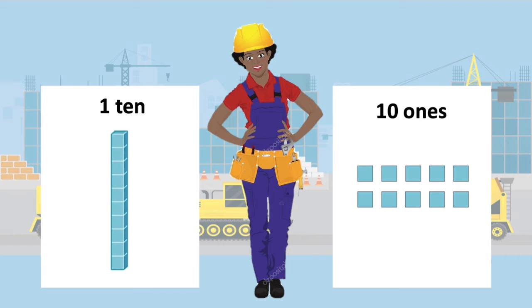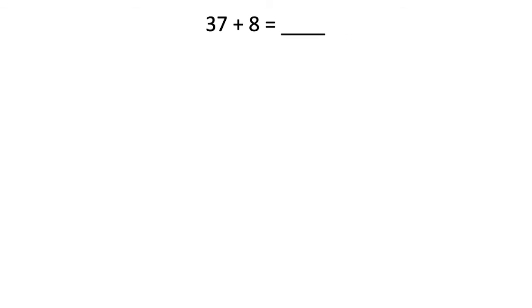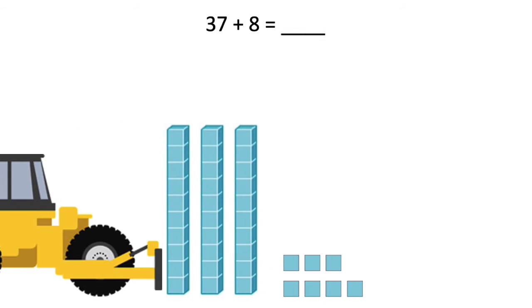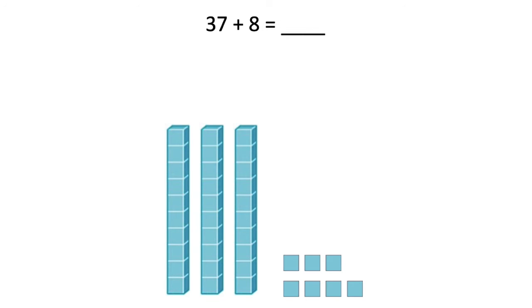So one ten is the same as ten single ones. And that's going to be really, really important to keep in mind as we're adding today. When we're adding, if we ever have ten or more ones, we have to put them together and make a group of ten. Let me show you what I mean. We're going to add 37 plus eight. So I'm going to start by putting out 37 — that's three tens and seven ones. Now we're going to add eight. That eight represents eight single ones, so I'm going to add eight single ones.